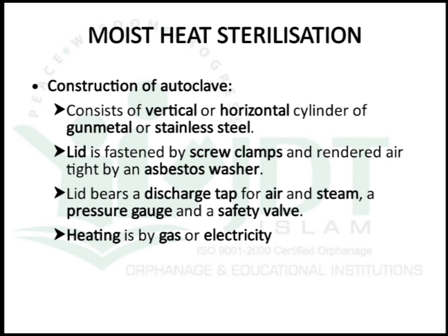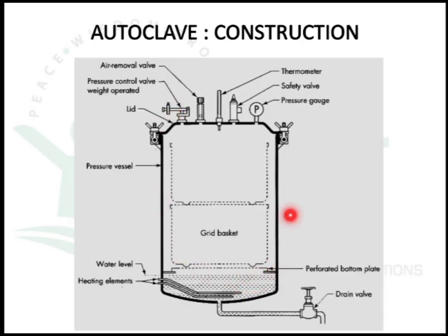The autoclave may be either vertical or horizontal, made of gunmetal or stainless steel. It has a lid fastened by screw clamps and rendered airtight by an asbestos washer. The lid bears a discharge tap for air and steam, a pressure gauge, and a safety valve. Heating is by gas or electricity. A vertical autoclave has a heating element, a perforated bottom plate above it, and a grid basket above that for placing materials to be sterilized. The lid consists of an air removal valve, a thermometer, a safety valve, a pressure gauge, and a screw cap.